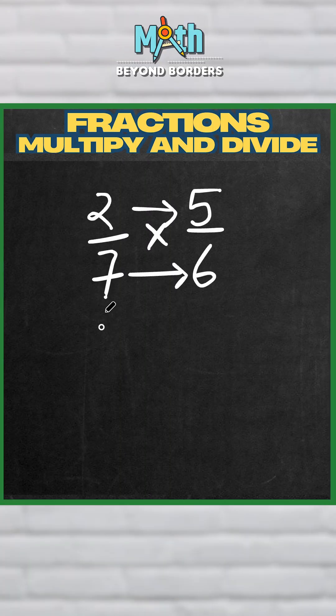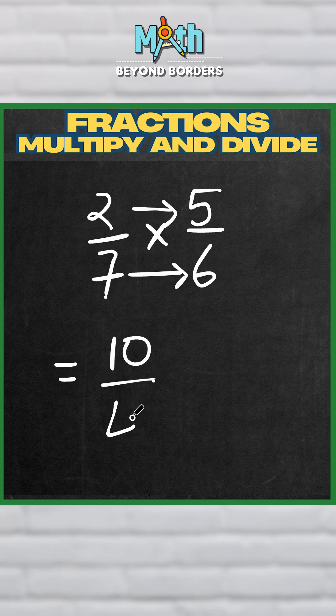No need to do anything else. So for example, 2 times 5 will be 10, and 7 times 6 will be 42.